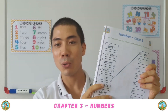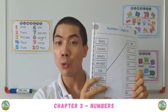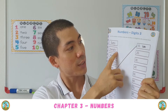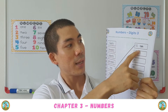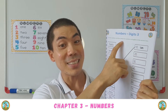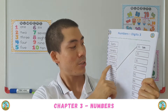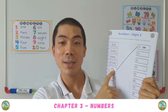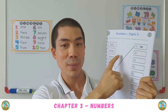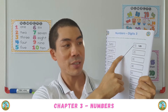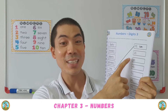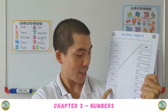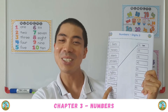Then we can go on to the third worksheet, which is the T's. So here we have 10, linking to 10. And now we try to find 20, 30, 40, and up to 100.